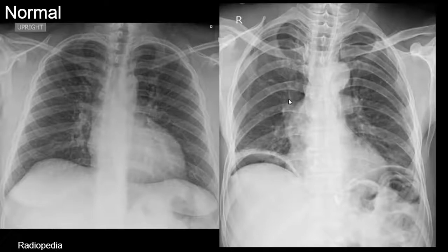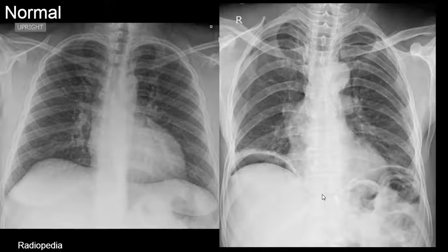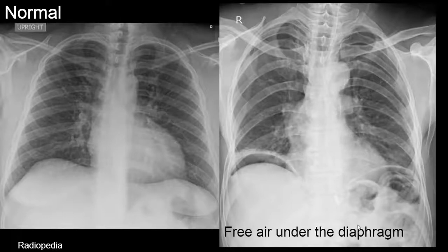Here we have a patient who has an upright chest radiograph. There is an enteric tube that terminates here, so it's probably malpositioned. In addition to that, the more important finding is the lucency under the diaphragm — under both diaphragms — and this is consistent with free air.